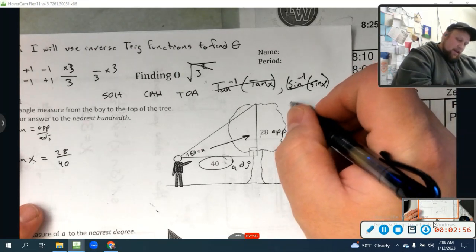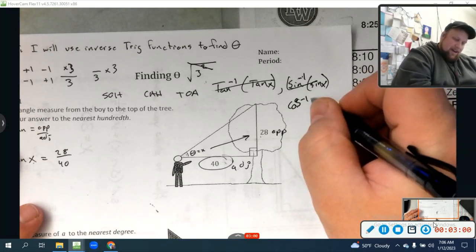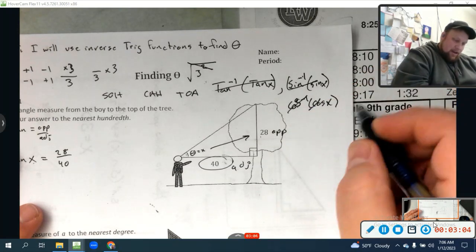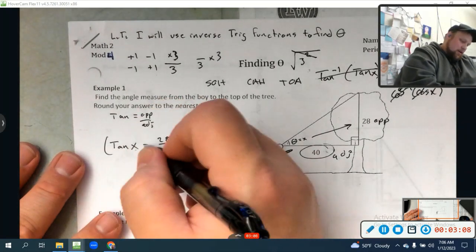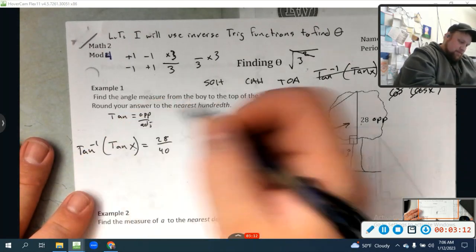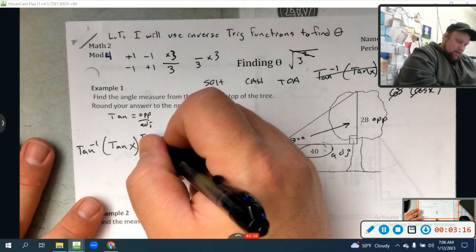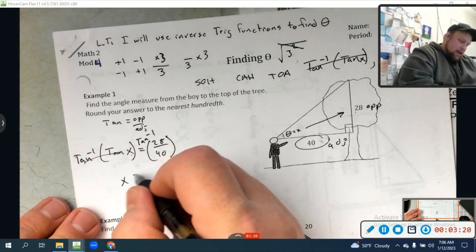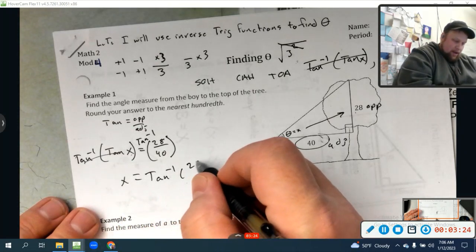If I'm taking the inverse cosine of the cosine of x, those cancel out, and I'm just left with x. So we're going to do that over here. On this side, I'm going to take the inverse tangent. And I've got to do the same over here, the inverse tangent. And that's canceling out. And I'm going to get that x equals the inverse tangent of 28 over 40.